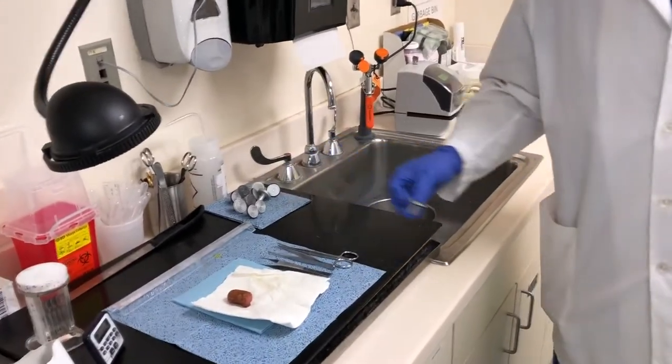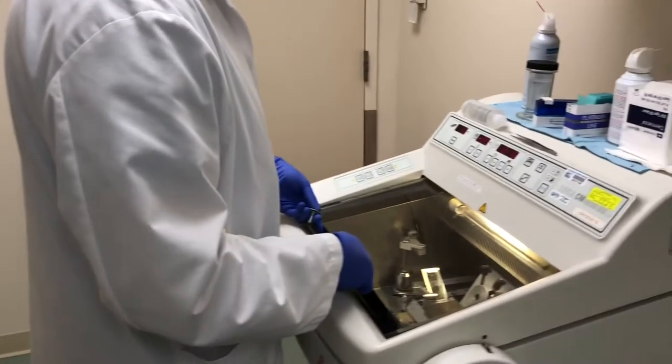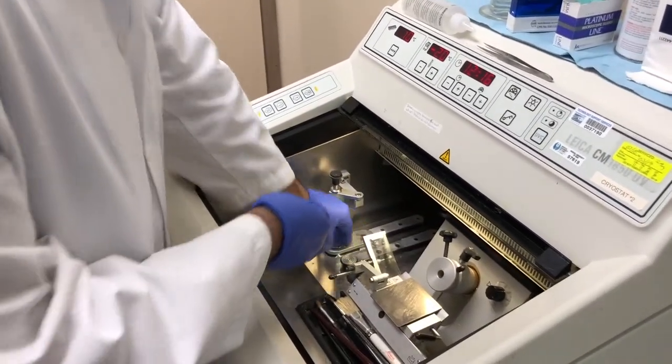Grab a few chucks, which are small pieces of steel that you will be embedding the tissue in. Put the chucks in the cryostat, which will then be cooled to approximately negative 20 to negative 30 degrees Celsius.